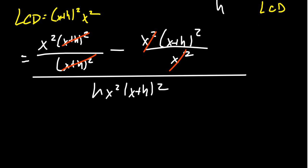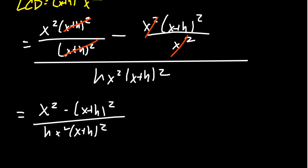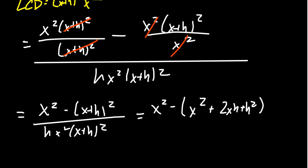Now all the baby fractions have moved out of the mother fraction. We have x² minus (x+h)² sitting above h times x² times (x+h)². While we don't multiply out denominators, we do want to multiply out the numerator. So you FOIL the (x+h)² to get x² + 2xh + h², sitting above the denominator h·x²·(x+h)². Then you can see the x² terms cancel.